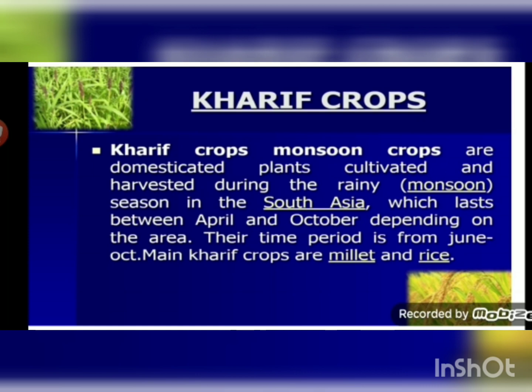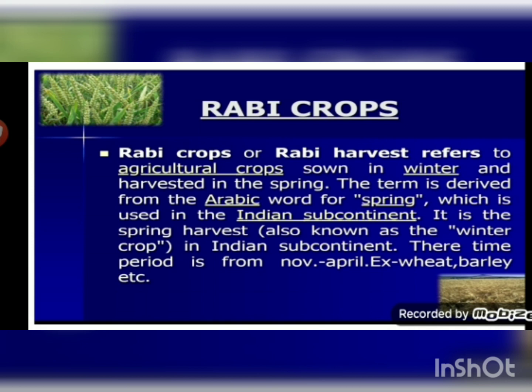Kharif crops are grown only in the rainy season, from April to October. Examples of Kharif crops are paddy, soybean, pigeon pea, maize, and cotton. Rabi crops are sown in winter and harvested in spring. The term is derived from the Arabic word for spring and is used in the Indian subcontinent. The time period is from November to April. Examples of Rabi crops are wheat, gram, peas, mustard, and linseed.